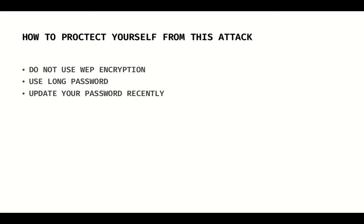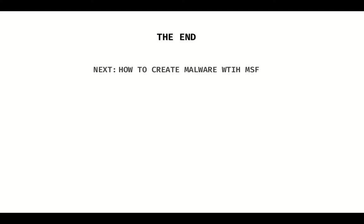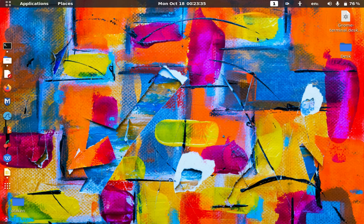So how do you protect yourself from this attack? Do not use WEP encryption — use WPA. Make sure you use a longer password, change it regularly, and do not use a very simple password. Use something more complicated that contains special characters like hashtags, brackets, and so on. We've reached the end of this tutorial. The next tutorial is how to create malware using msfconsole. Thank you for your time — see you in the next tutorial.